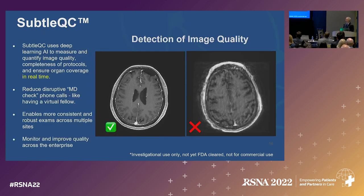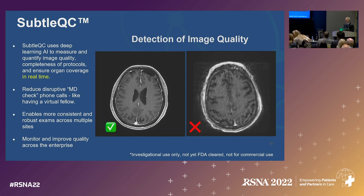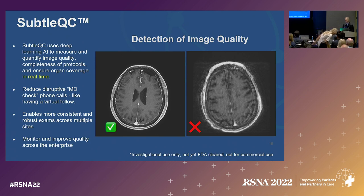SubtleQC is the idea that we can use deep learning to measure and quantify image quality. We can also determine whether protocols are complete and ensure that exams are actually covering the entire field of view in real time, making sure sites don't send an incomplete study that may require callbacks or disruptive phone calls to radiologists.